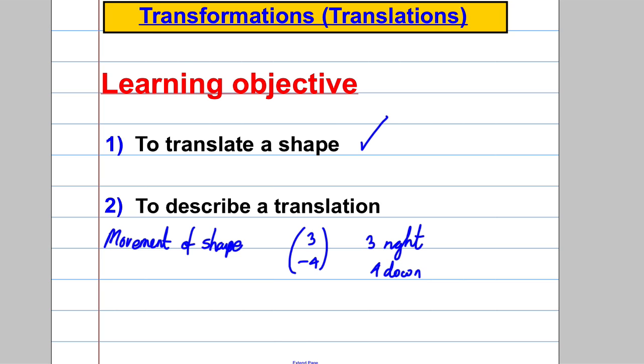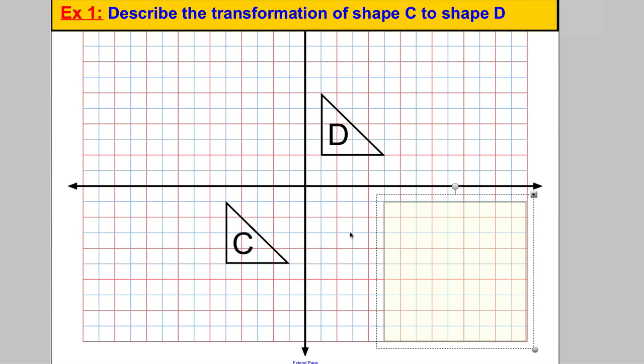A typical question would be: describe the transformation of shape C to shape D. Because the shapes are exactly the same size and direction with no change, it must be a translation. Translation is the transformation that does not turn the shape or make it bigger.